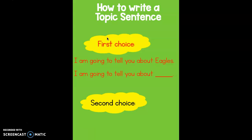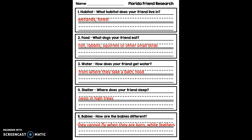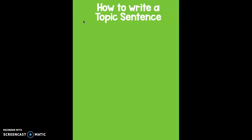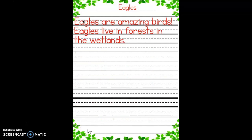Okay boys and girls, you should have written your topic sentence by now on your rough draft. Now you're ready for your first fact. Go to your organizer and reread your notes about where your Florida friend lives — which habitat — and try your very best to take your notes and put them into a sentence, just like I did right after my topic sentence: 'Eagles live in forests and the wetlands.' If you wrote smaller than I did and have room after your topic sentence, start your second sentence right after it. I ran out of room, so I had to go to the second line.